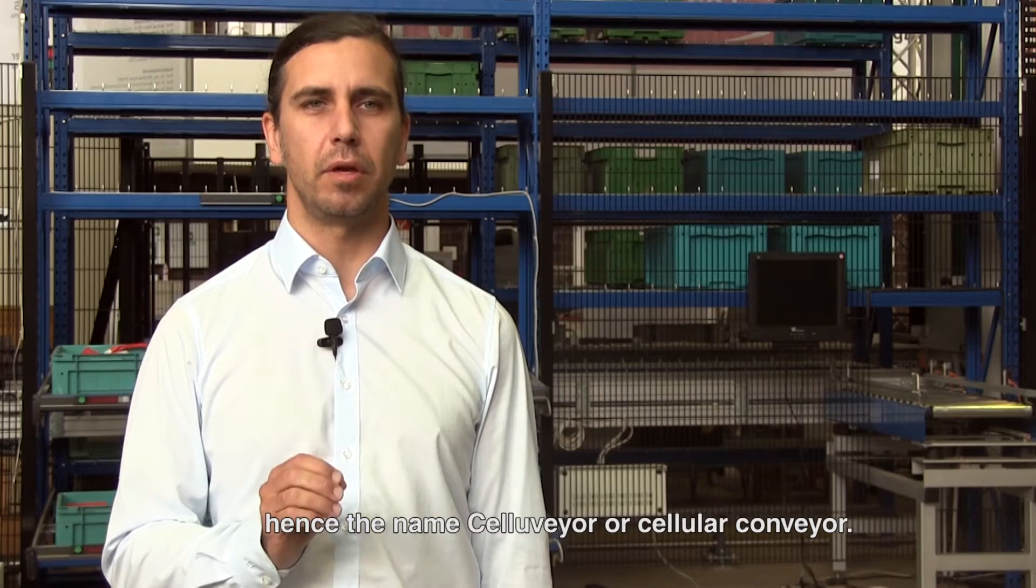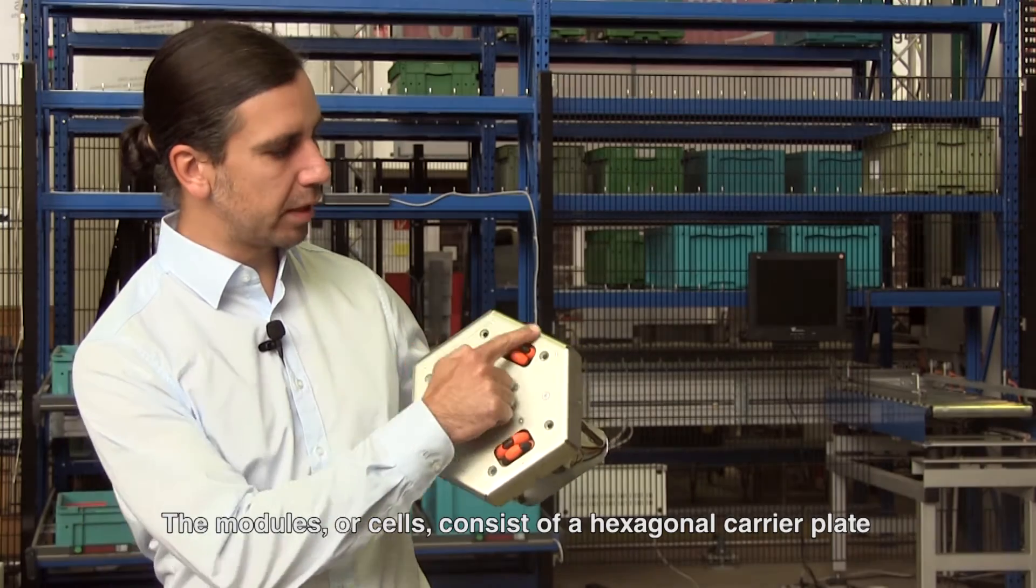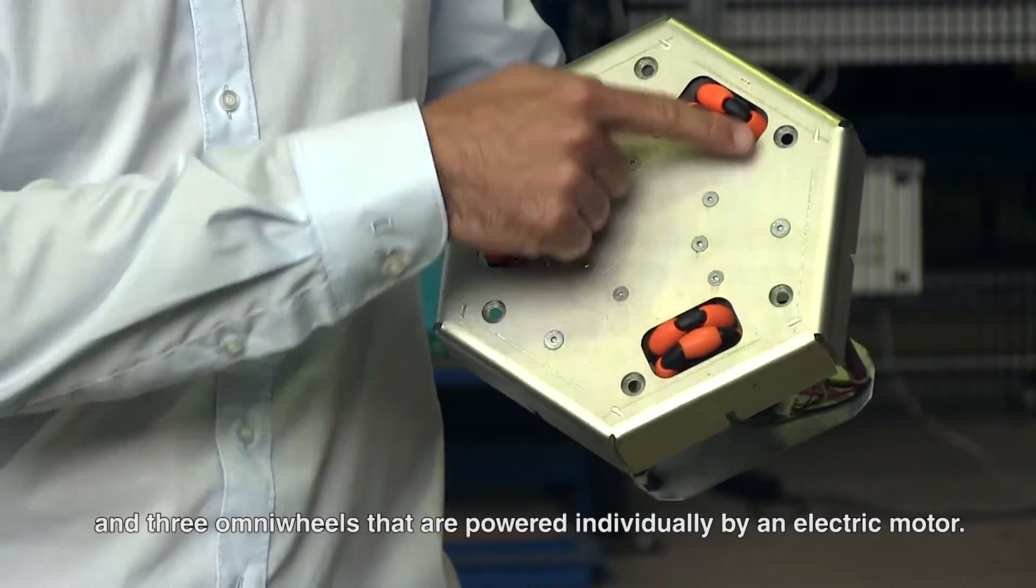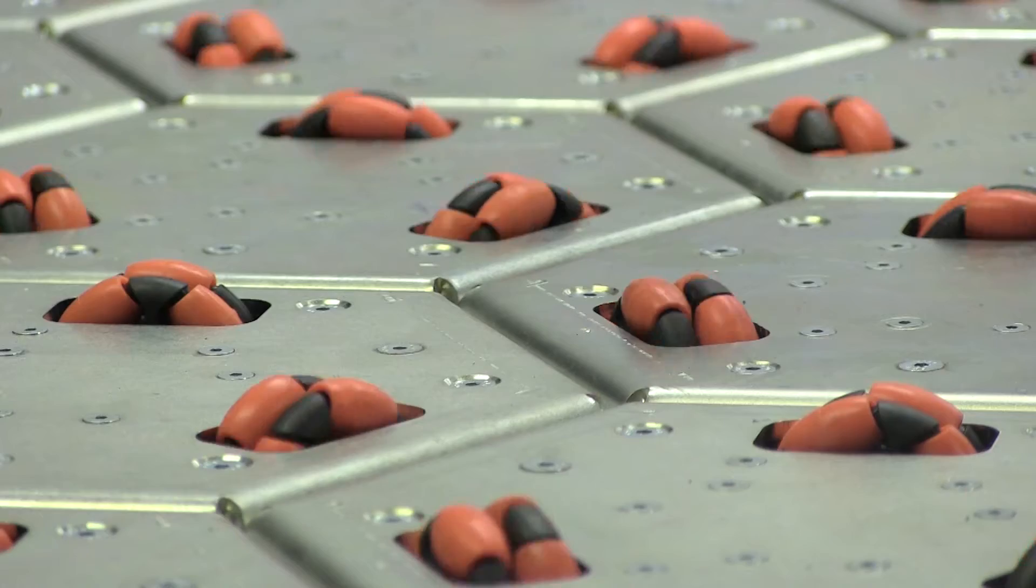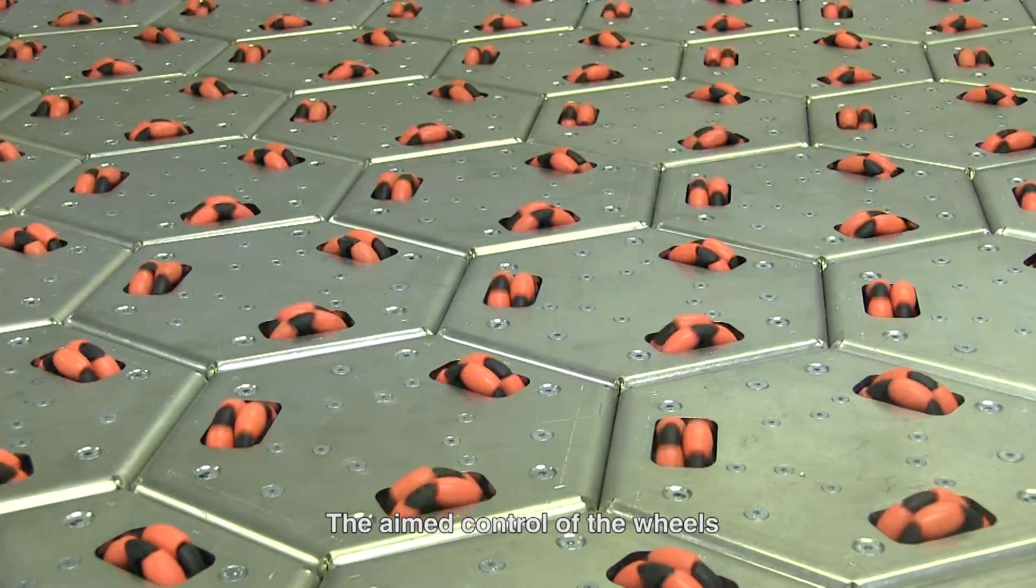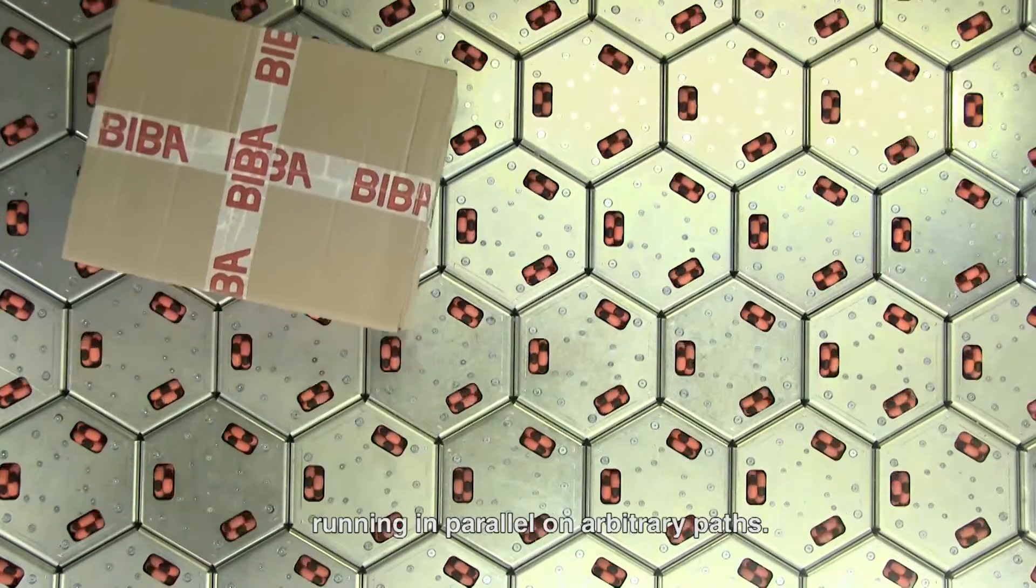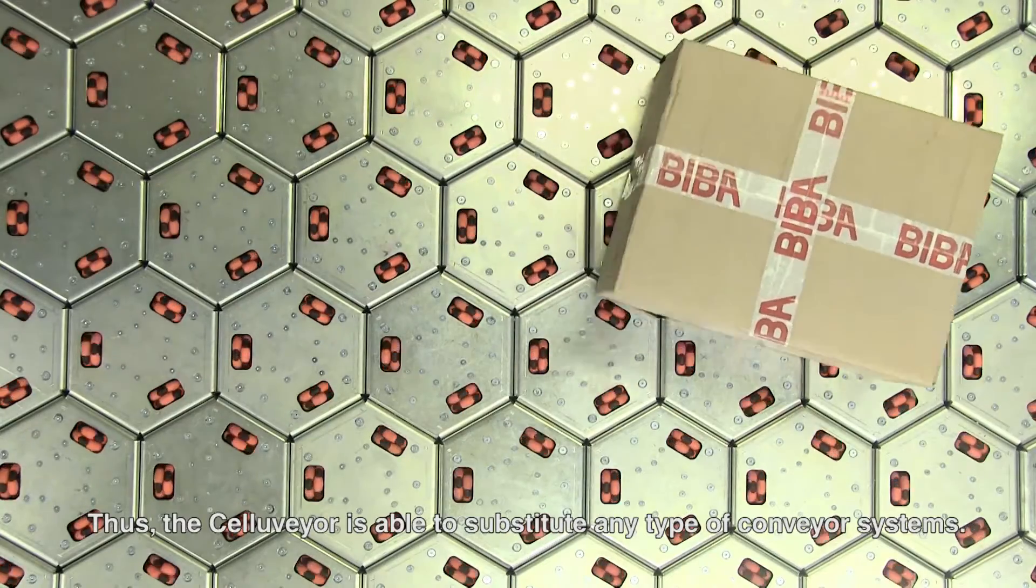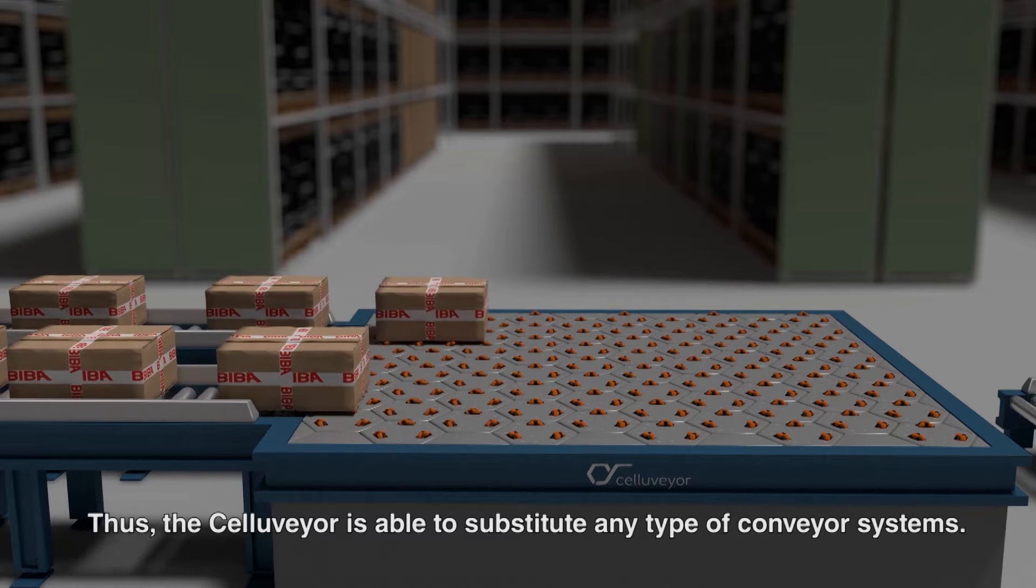The modules or cells consist of a hexagonal carrier plate with three omnidirectional wheels, each individually driven by an electric motor. Through targeted control of the wheels, any number of objects can be moved and positioned on arbitrary paths parallel to each other. Thus the Celluvayer is able to replace nearly any type of conveying installation.